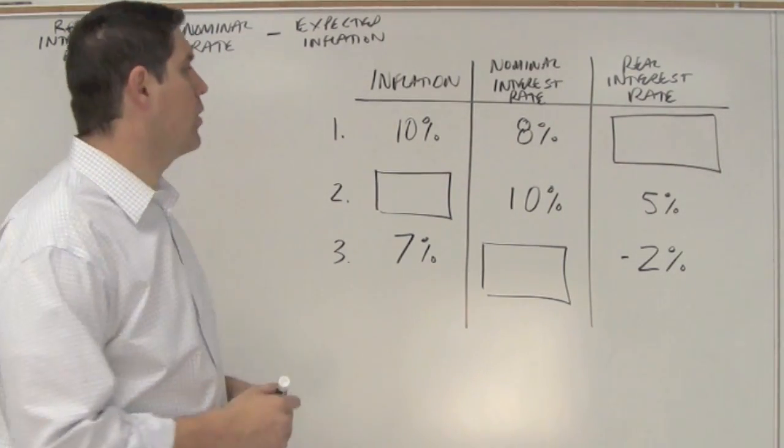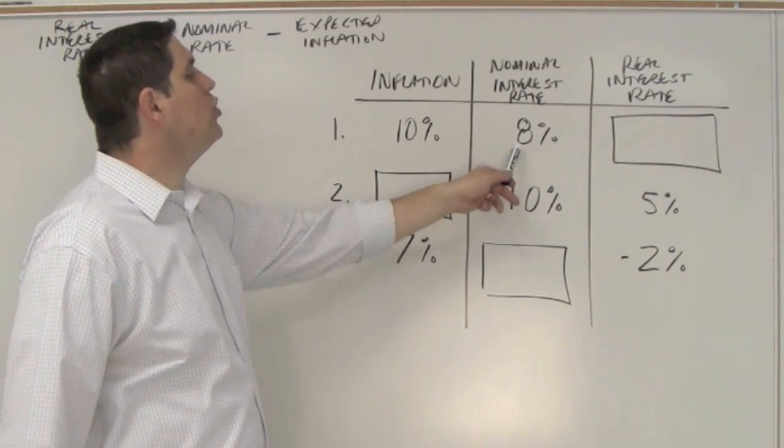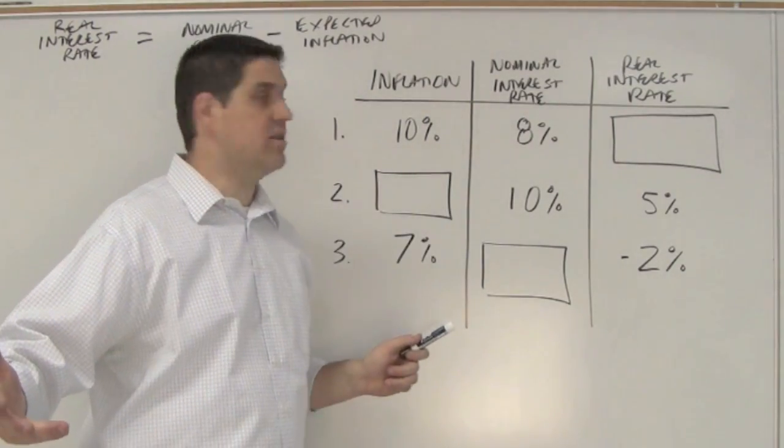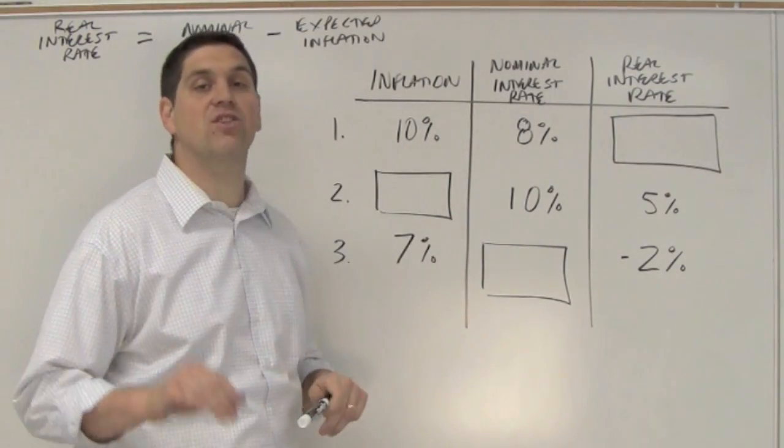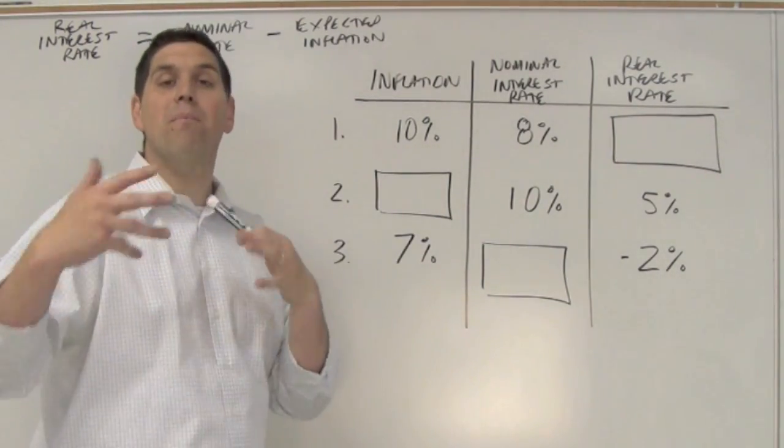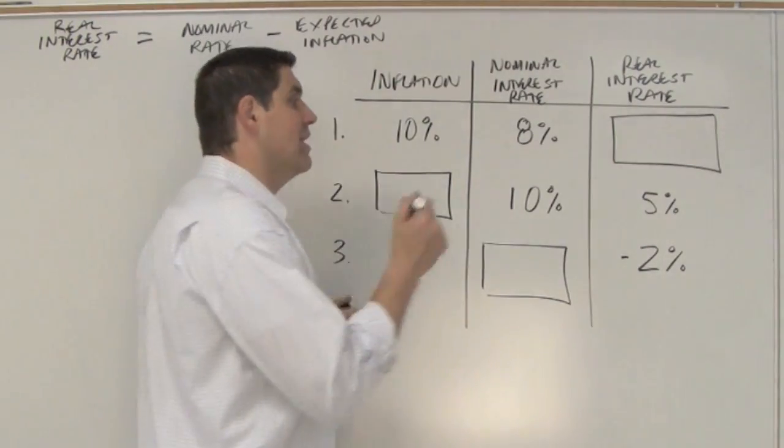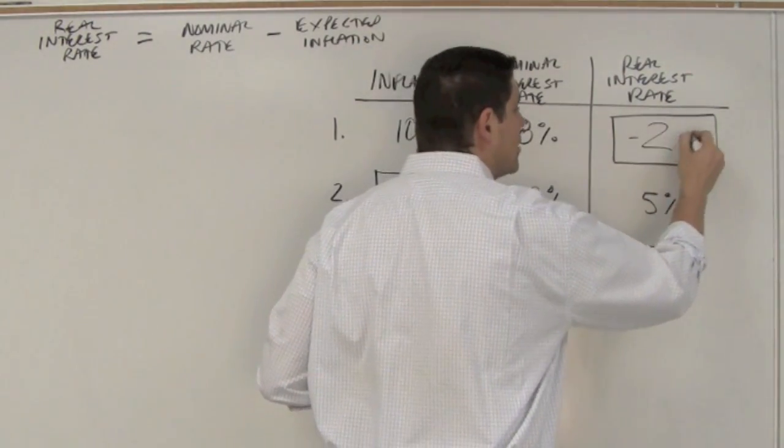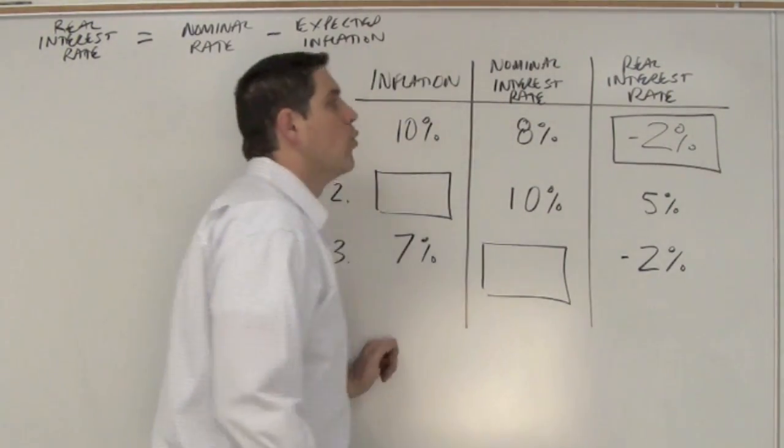All right, you ready? Here we go. If you charge someone 8% interest, and over that period of time, inflation has actually gone up 10%, you're getting paid back in money, but that money is actually less purchasing power. So it's actually negative 2% real interest rate.